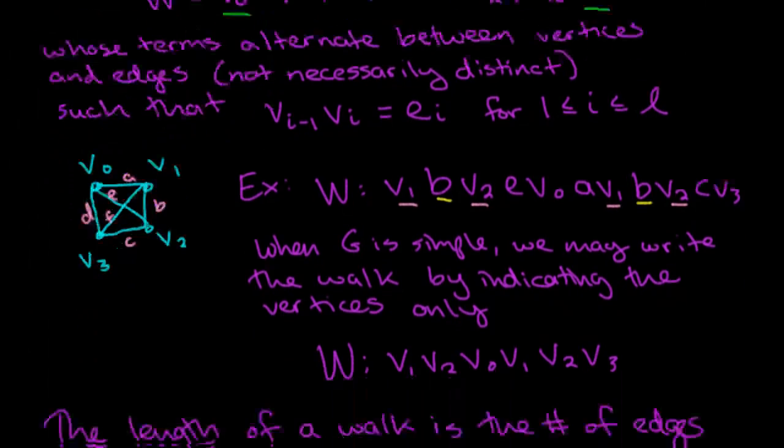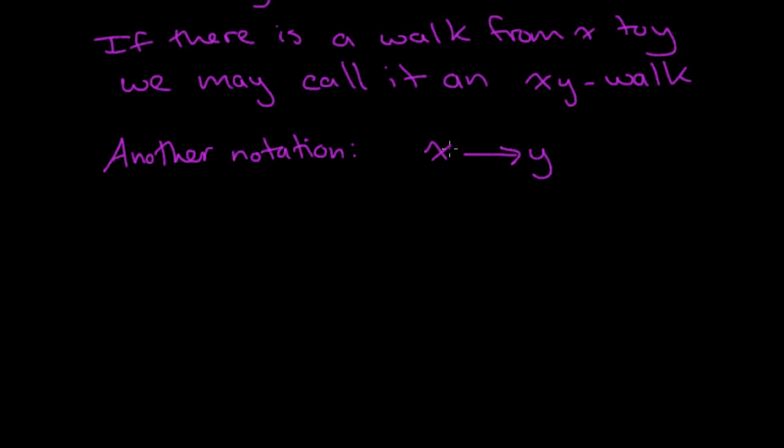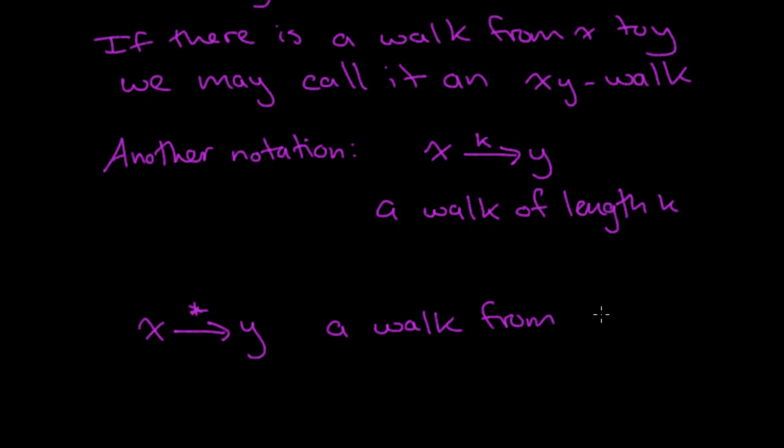So in general, a walk of length K would be represented by this arrow between X and Y with a K on top. So this notation means a walk of length K. K edges. And maybe if there is a walk, but you don't know its length, so then you could do something like this with a star. Sometimes this notation is used. This just means a walk from X to Y. But you don't know the length. That's why there's a little star.